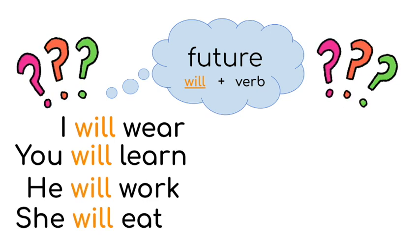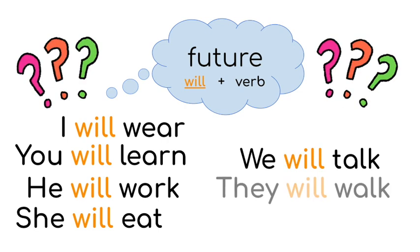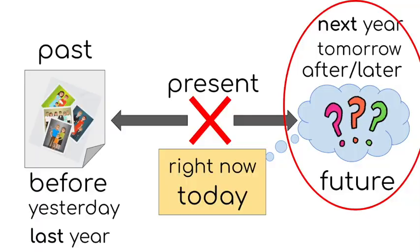She will eat. We will talk. They will walk. So will is used to express the future. Not now, later, tomorrow, next year. So that's the future.